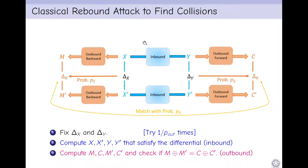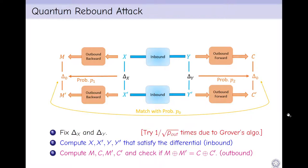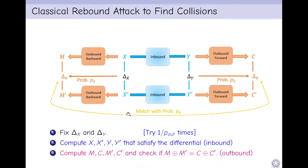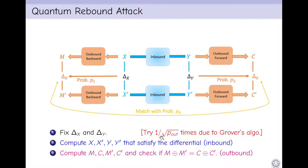We can use this idea of rebound attack to find collisions. We fix Δx and Δy, where Δx propagates to Δ0 with probability p1 and Δy propagates to Δ0 with probability p2. We then compute x and x' from Δx and y and y' from Δy that satisfy this inbound differential. Then we compute m from x, c from y, m' from x', and c' from y', and finally check if m⊕m' equal to c⊕c' in the outbound phase. Classically we need to try about 1/p0 times to have a match. But in quantum setting we need to try 1/√(p0) times.